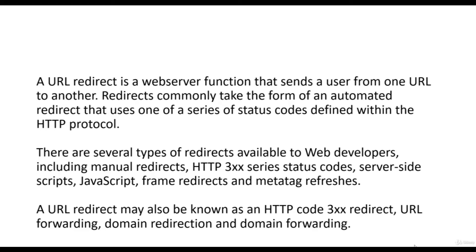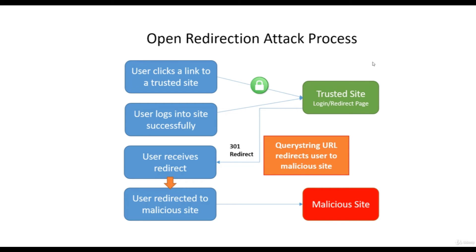We have to take care of status codes starting with 3xx. We'll see all about URL forwarding, domain redirection, and domain forwarding in the upcoming lecture. You can see the open redirection attack process right here. The upper part shows a successful login to a trusted site — the user clicks a link to a trusted site with SSL encryption and logs in successfully.